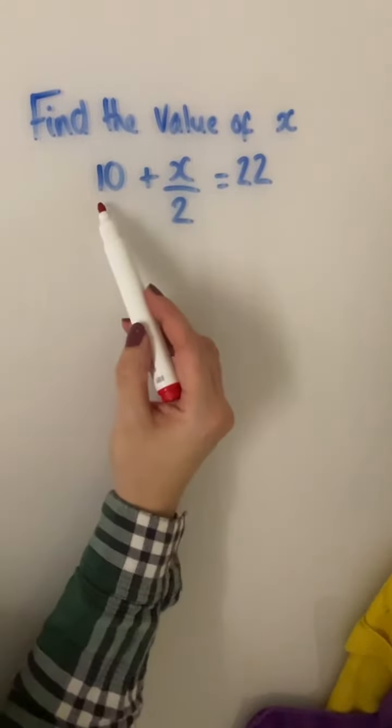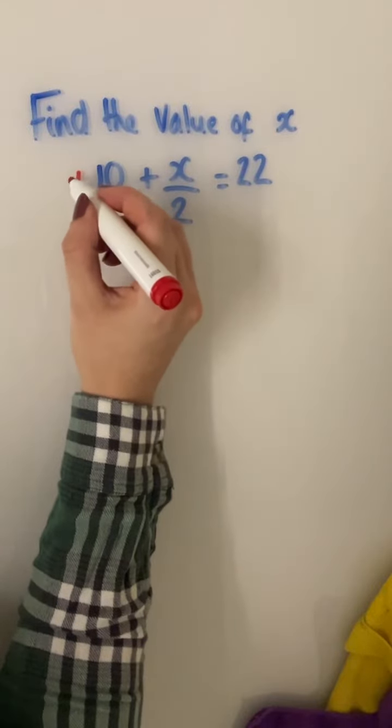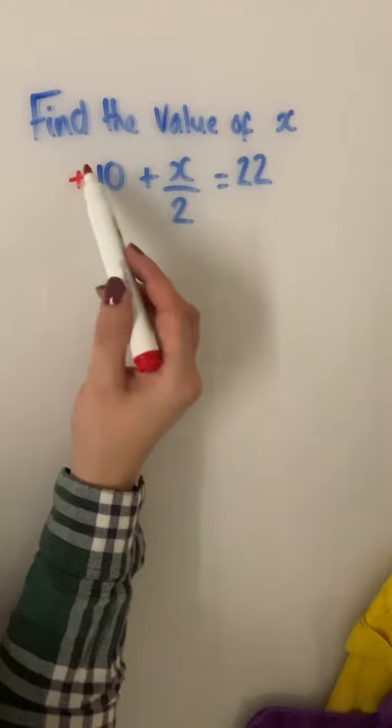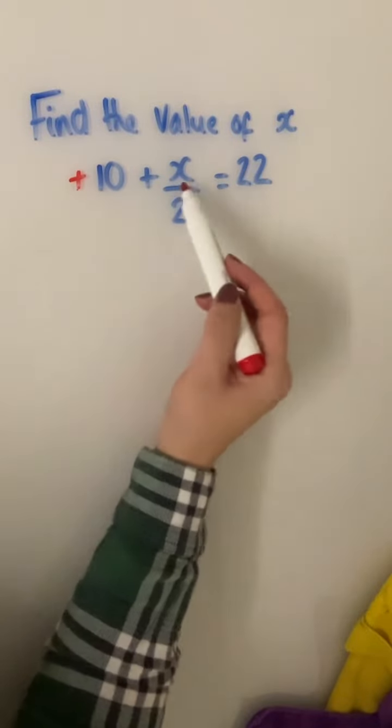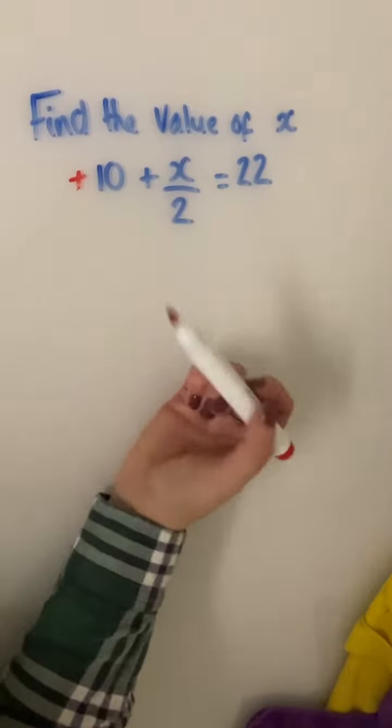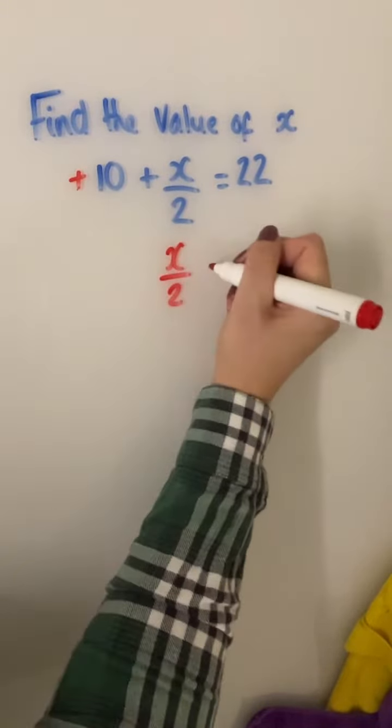To solve this question, we first need to deal with the 10. What you don't always write is that 10 is a positive number, and as a positive number it would have an addition sign if it was after another term. The inverse operation to addition would be subtraction, so we still have the x divided by 2 over this side.